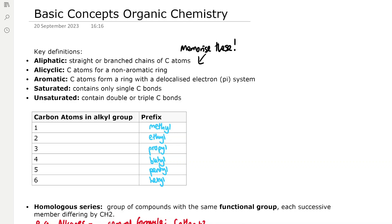Aliphatic compounds contain straight or branched chains of carbon atoms. Alicyclic compounds contain carbon atoms which form a non-aromatic ring. Aromatic compounds contain carbon atoms which form a ring with a delocalized electron pi system.